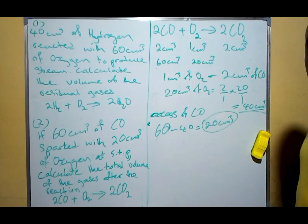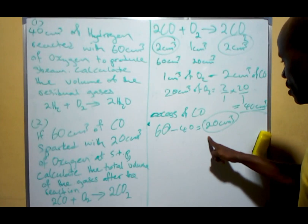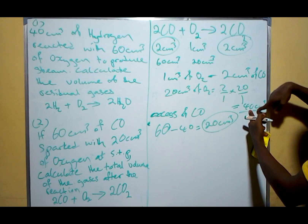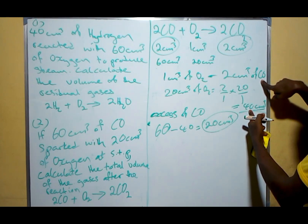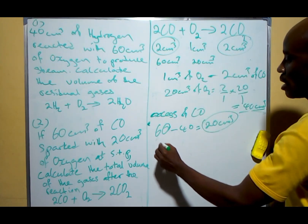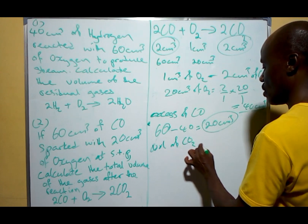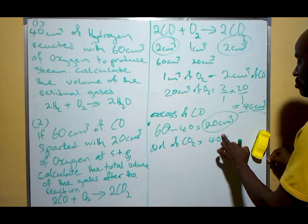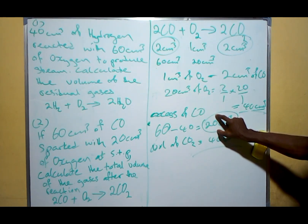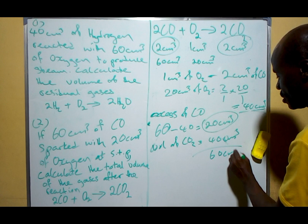The next gas we need is the product, which is carbon dioxide (CO₂). Because 20 cm³ of oxygen combined with 40 cm³ of CO, leaving behind 20 cm³ of excess CO. From the ratio, since the CO that combines is 40 cm³, the CO₂ produced will also be 40 cm³. So volume of CO₂ produced = 40 cm³. Adding the excess CO (20 cm³) and the CO₂ (40 cm³), the total volume of gas after the reaction = 60 cm³.